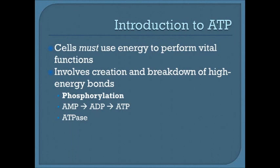ATP stands for adenosine triphosphate. Cells use energy to perform vital functions, and in order to create energy, we need to create and break down high-energy bonds. The creation of high-energy bonds occurs via phosphorylation — adding a phosphate group to a molecule. Our general energy source is ATP, built from adenosine monophosphate to adenosine diphosphate to adenosine triphosphate (one to two to three phosphate groups). The breakdown of ATP into ADP via the enzyme ATPase releases energy we can actually use.